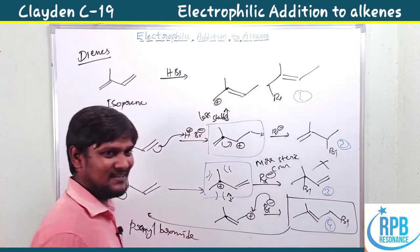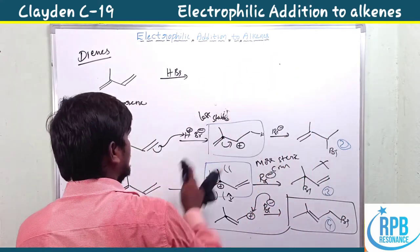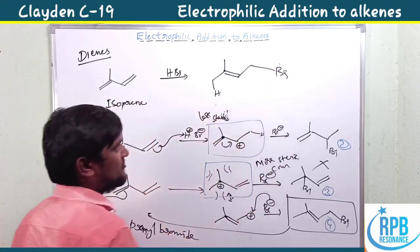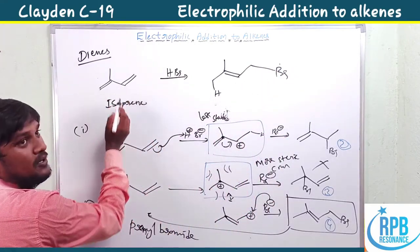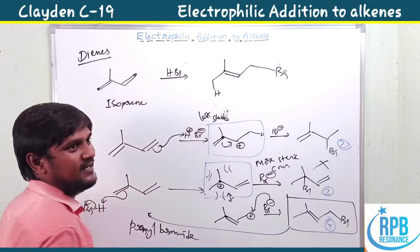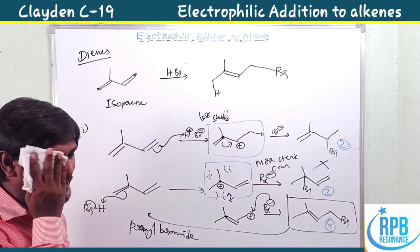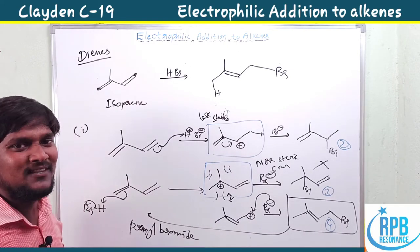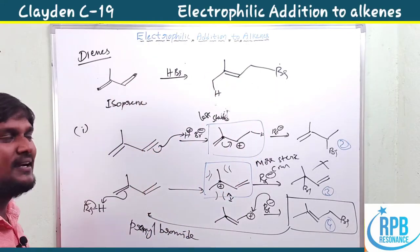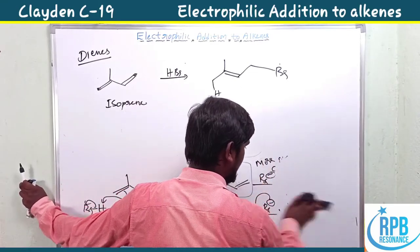The major product is therefore the primary bromide — prenyl bromide (3-methylbut-3-en-1-yl bromide... effectively a primary bromide). Among the four options, primary bromide is the major product. This shows that for dienes, both ends of the diene are attacked by H⁺ and Br⁻ — the electrophile and nucleophile of the reagent attack both terminals of the diene.